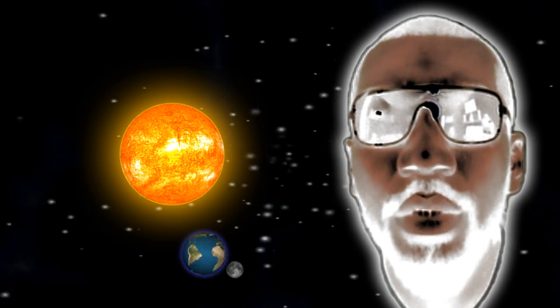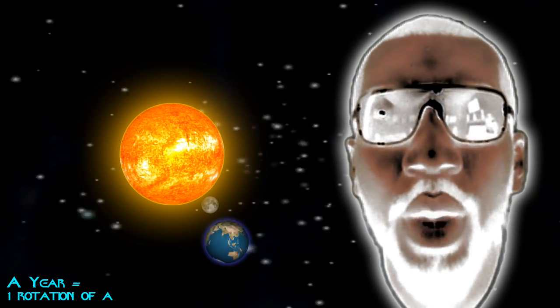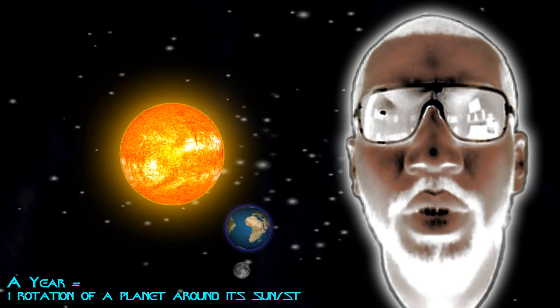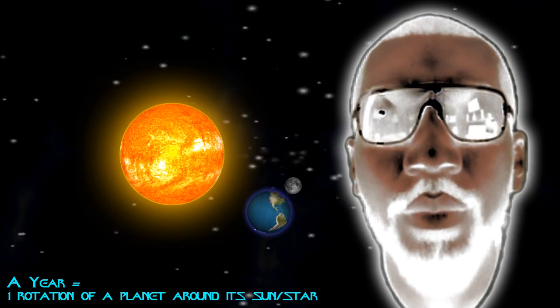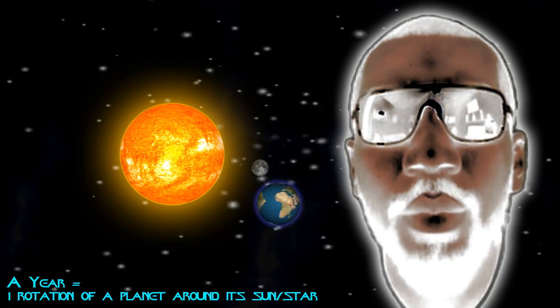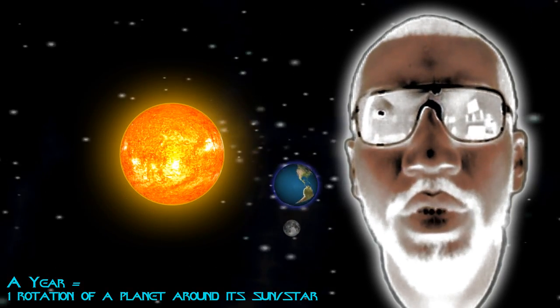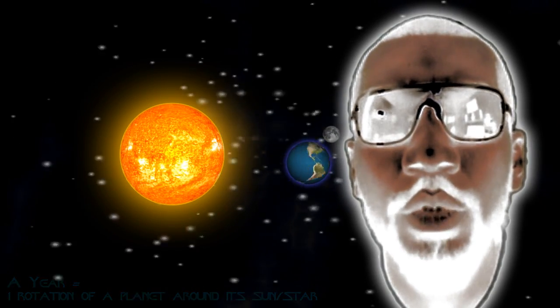What is a year? A year is the amount of time it takes for the Earth to completely rotate around the sun 360 degrees. If the Earth was closer to the sun, the year would be shorter. If the Earth was farther away from the sun, the year would be longer.